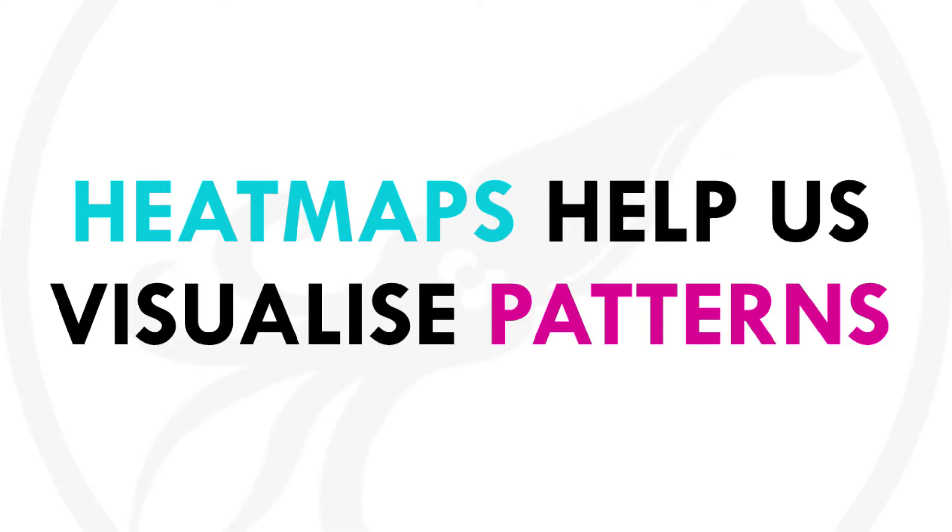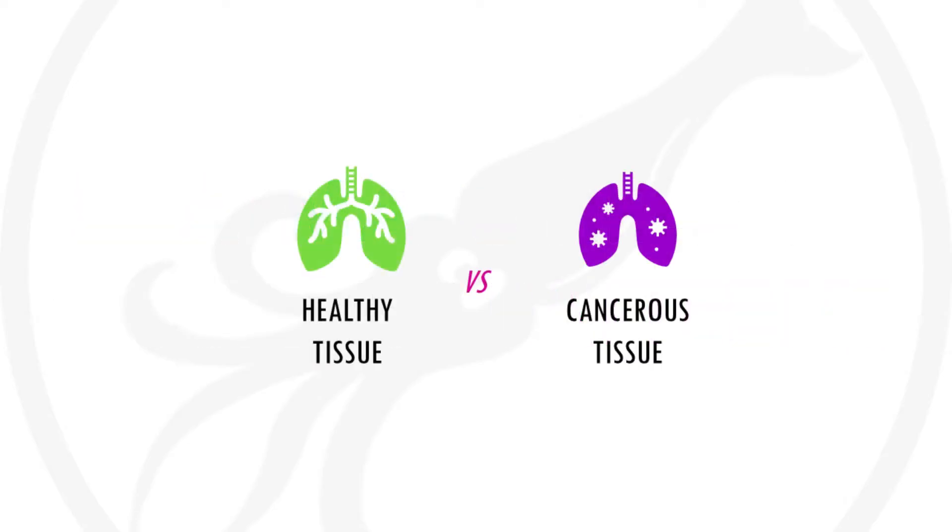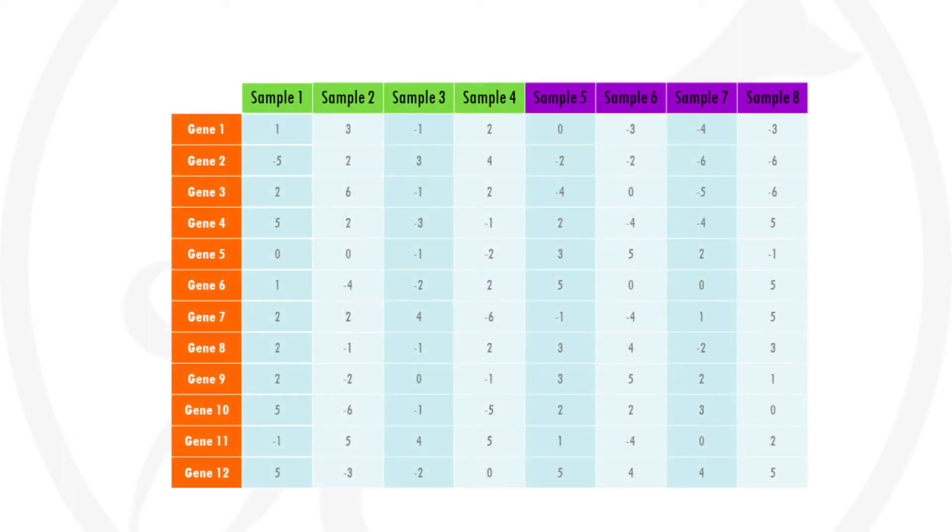Let's give a more specific example. We are studying gene expression differences between lung cancer tissue and healthy tissue. After our RNA-seq pipeline we are left with something like this. To simplify things we have the expression of 12 genes and 8 samples. The 4 green samples are from healthy tissue and the 4 purple samples from cancer tissue.